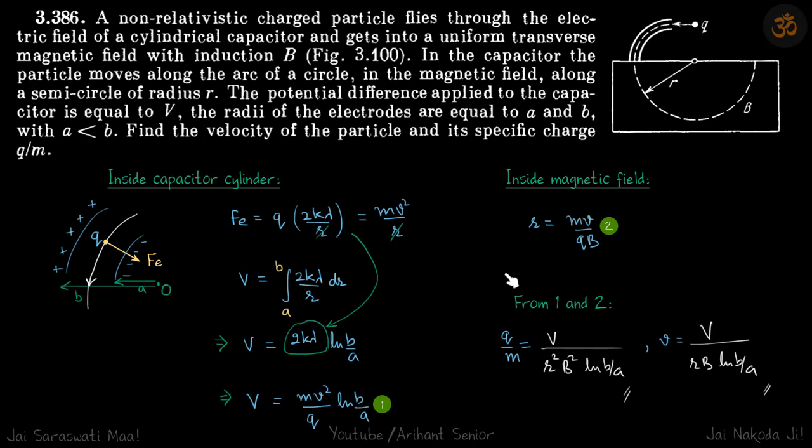Now we have two equations and two variables. The variables are V and specific charge Q by M. If you eliminate V, you will get this answer. And if you eliminate Q by M, you will get the value of V, which are our answers.